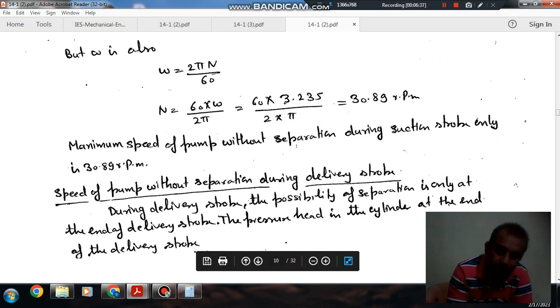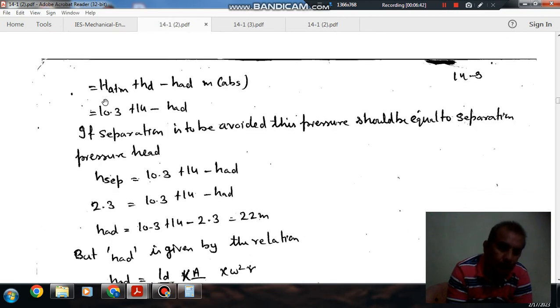Pressure head in the delivery stroke at the end of delivery stroke is atmospheric head minus delivery head minus acceleration head. So that is the acceleration head formula.